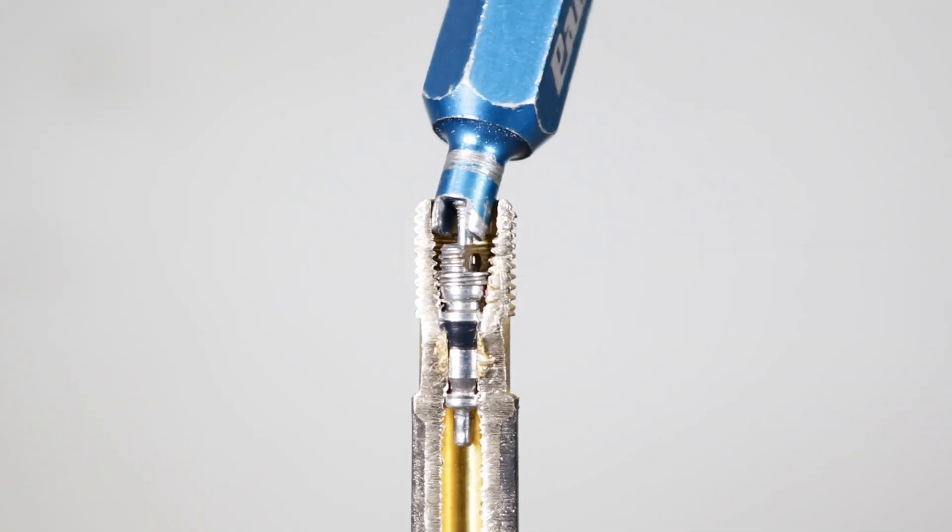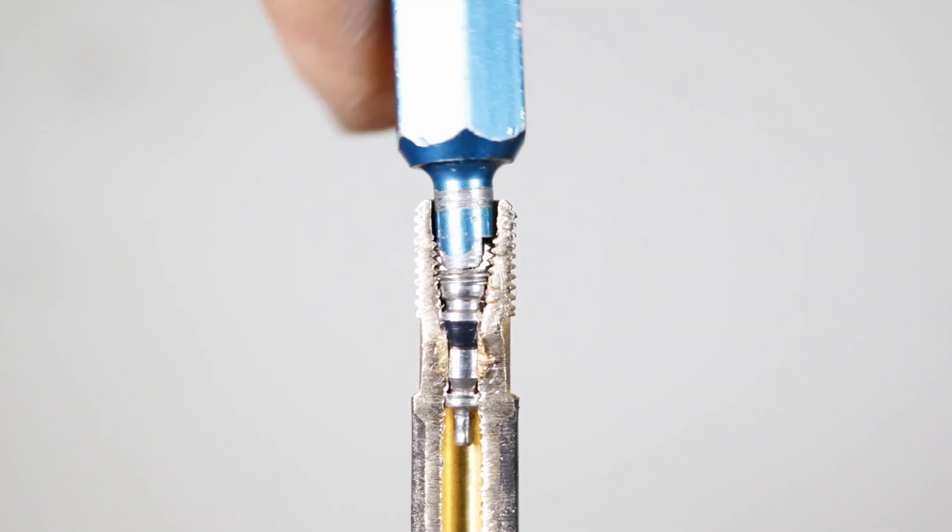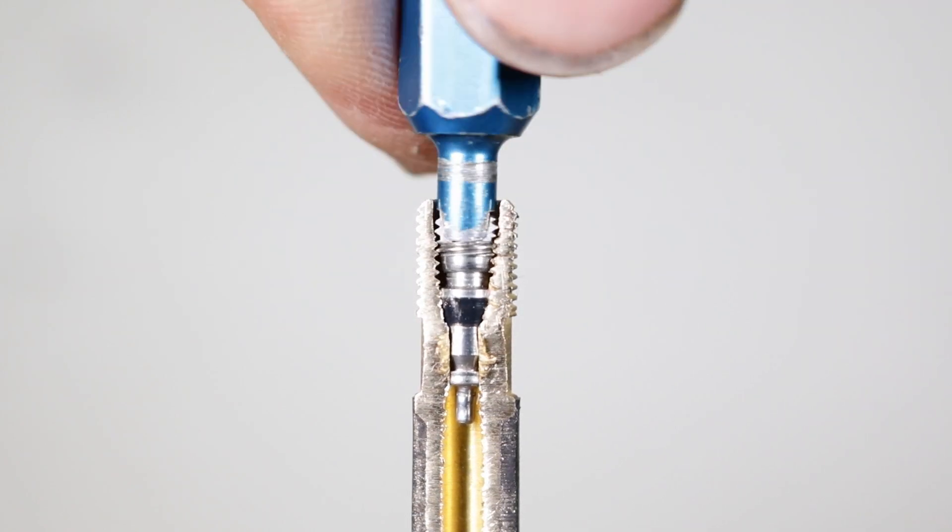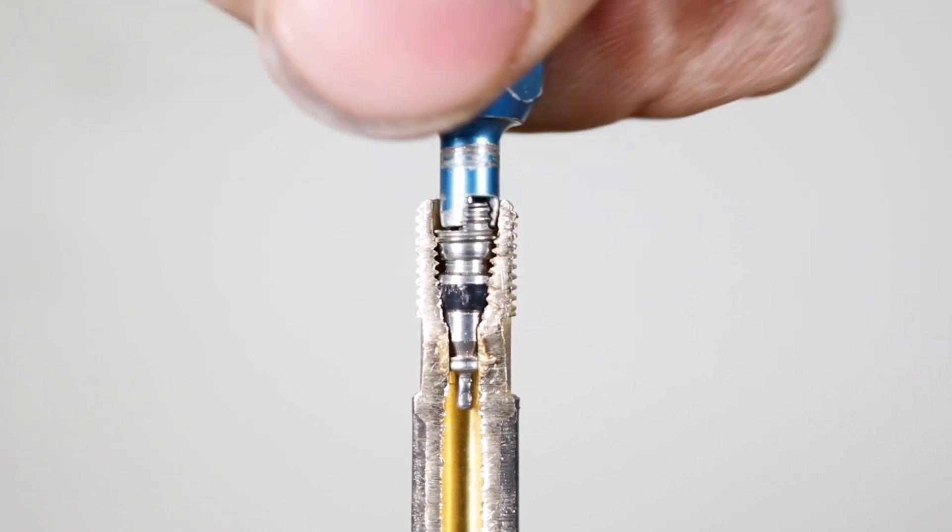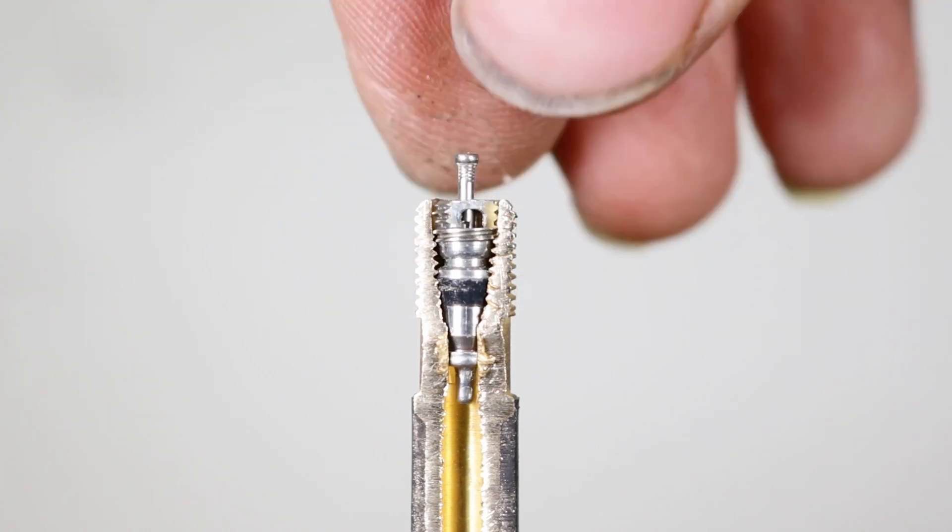Now use the valve core remover to unscrew the valve core anti-clockwise. Remove it from the valve.